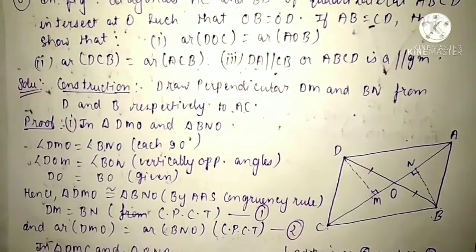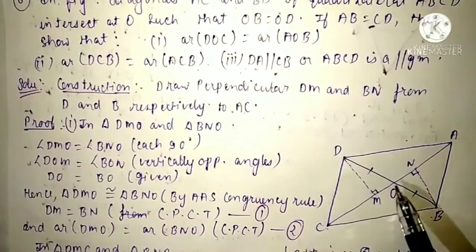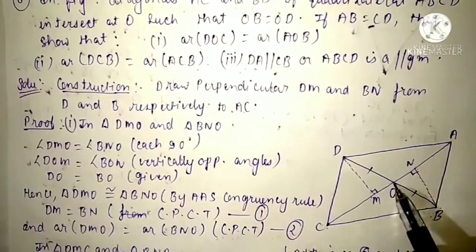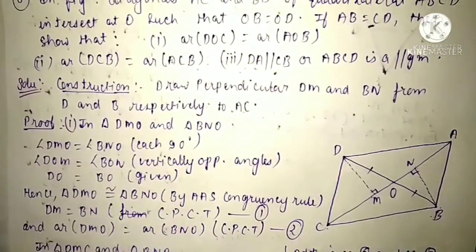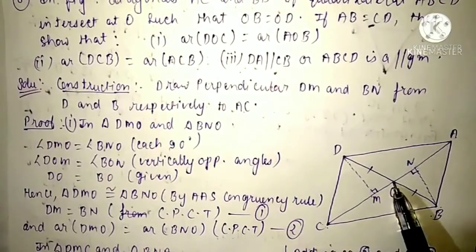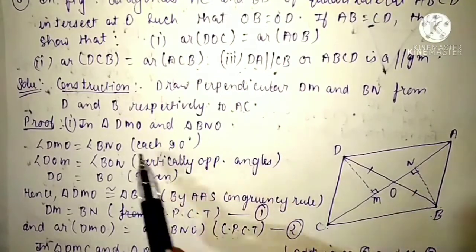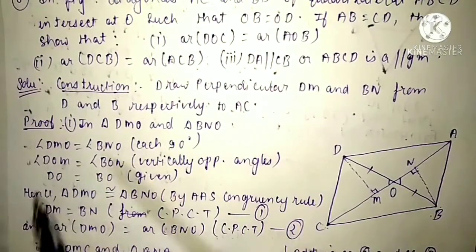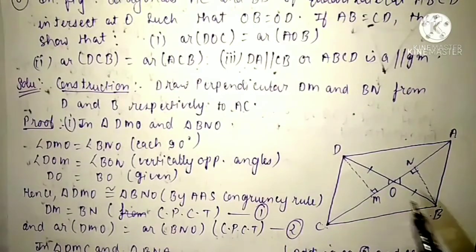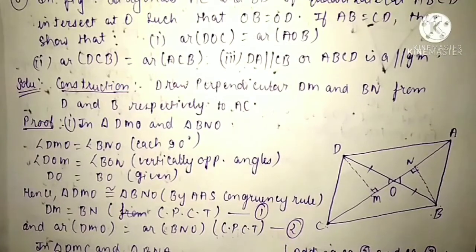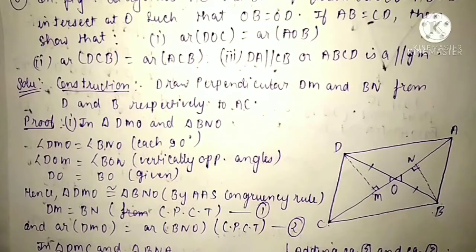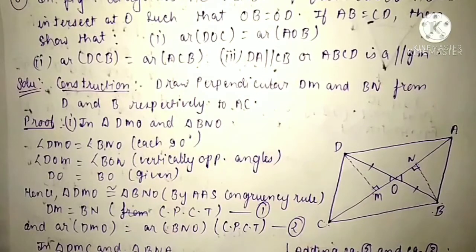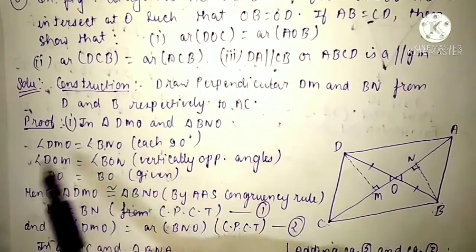Now we will prove the first part. Take triangle DMO and triangle BNO. In these two triangles, both angles equal 90 degrees. So angle DMO equals angle BNO, each 90 degrees. And these two angles are vertically opposite angles, so angle DOM equals angle BON. It is given that BO equals OD, so DO equals OB.